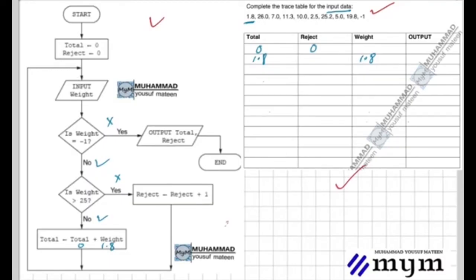Then we move to the next input. Weight is 26.1. We check: is it minus one? No. Is it greater than 25? Yes. So reject equals reject plus one. The reject value was zero, plus one makes it one. Then we loop back.